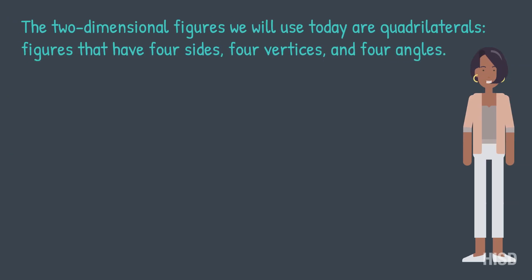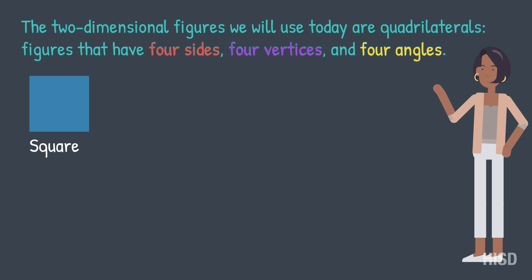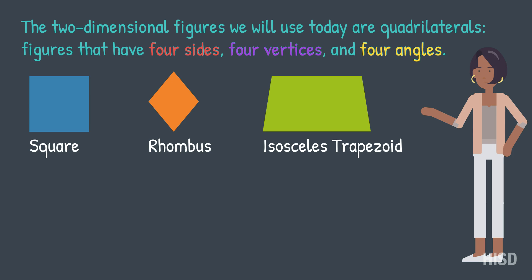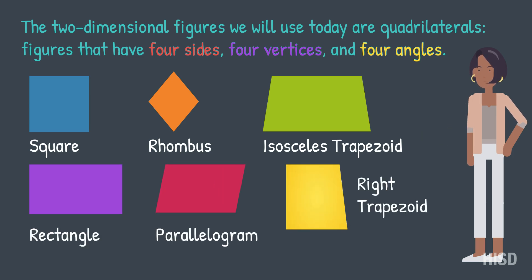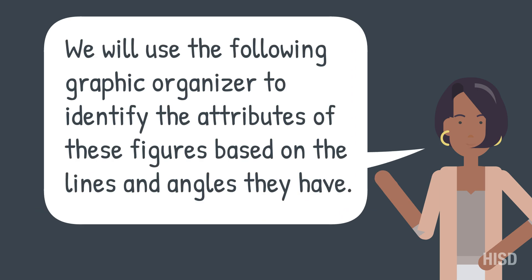The two-dimensional figures we will use today are quadrilaterals — figures that have four sides, four vertices, and four angles. These include: square, rhombus, isosceles trapezoid, rectangle, parallelogram, and right trapezoid. We will use a graphic organizer to identify the attributes of these figures based on the lines and angles they have.